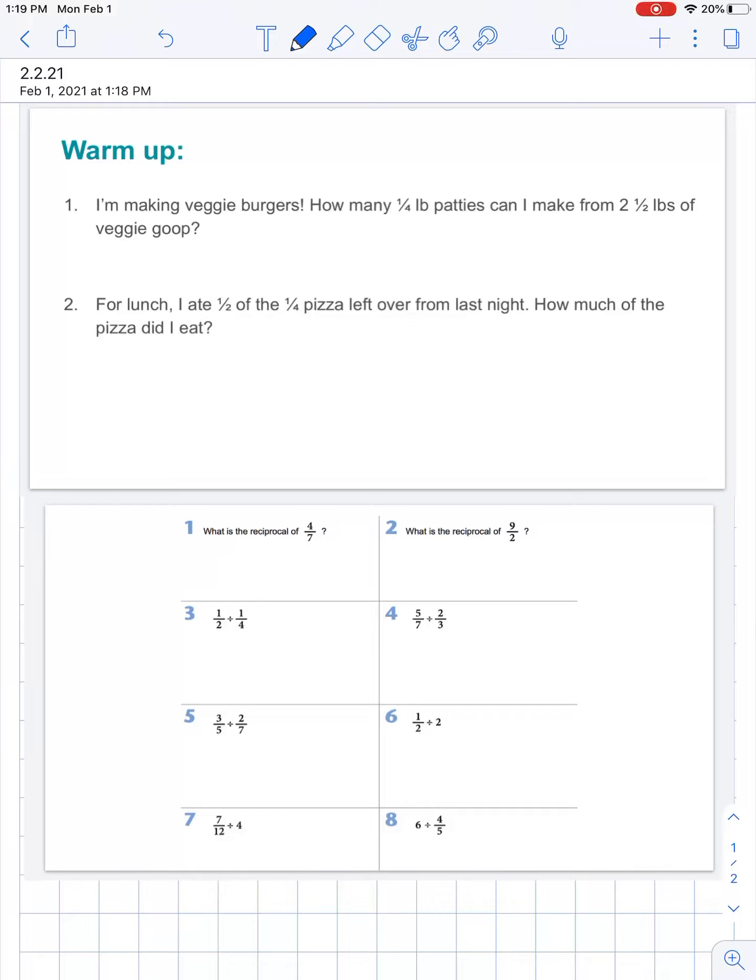All right guys, let's talk about today's warm-up. Problem number one says I'm making veggie burgers. How many quarter pound patties can I make from two and a half pounds of veggie goop? Imagine we're making veggie patties, it's just a bunch of veggies and grains that you pop in a blender.